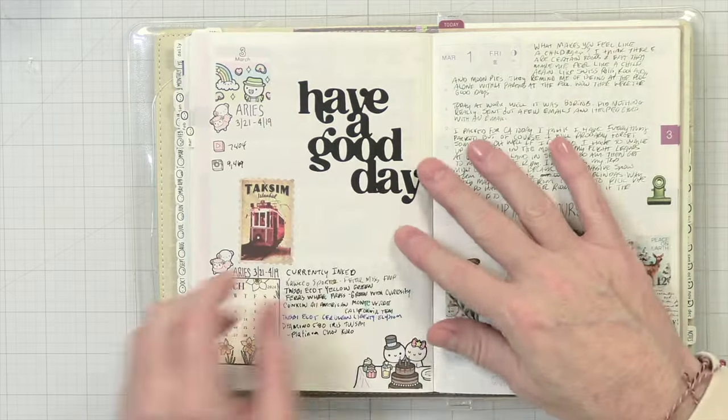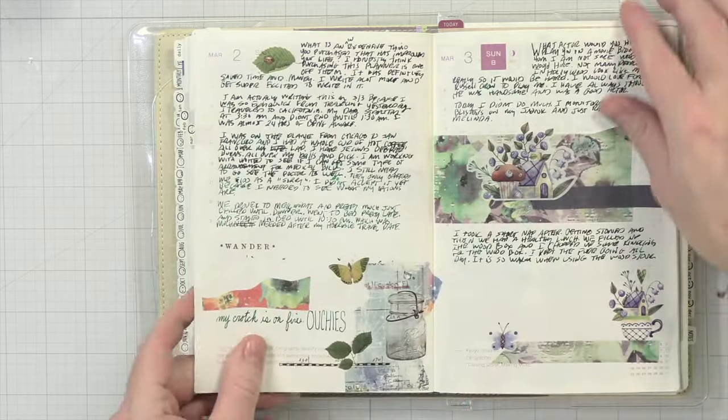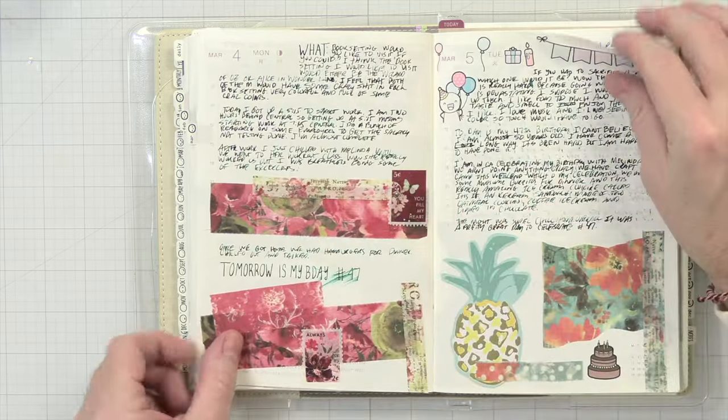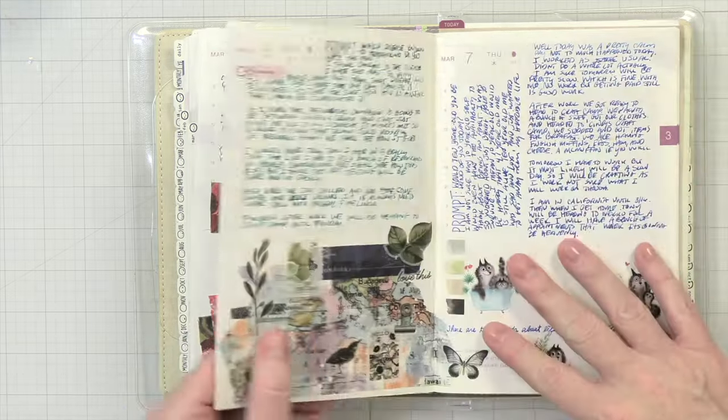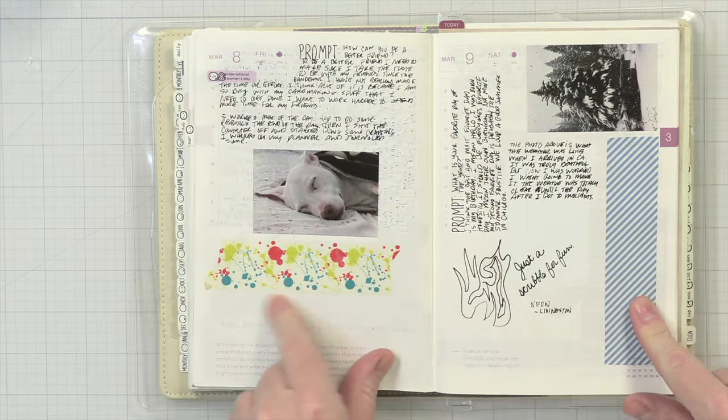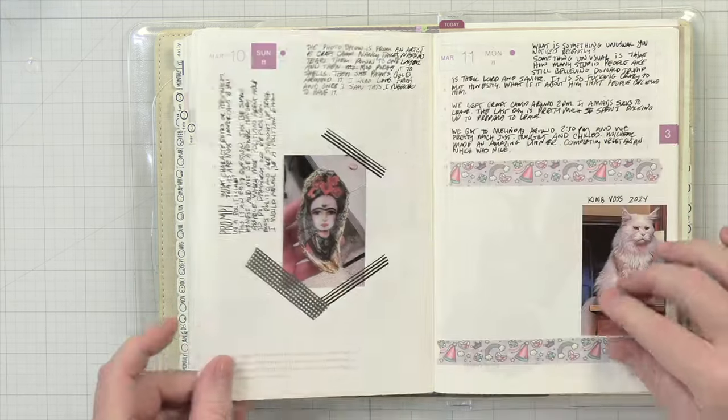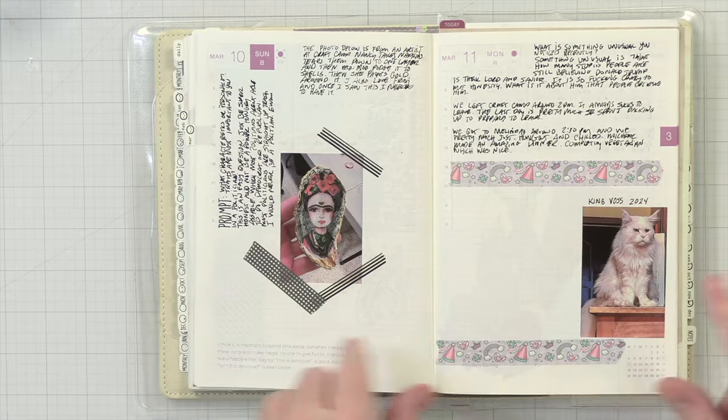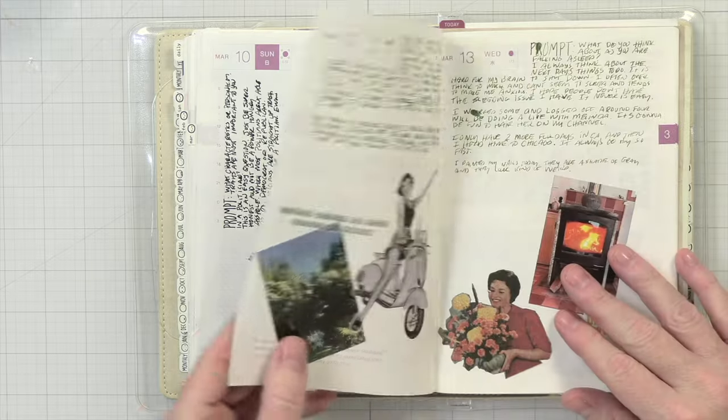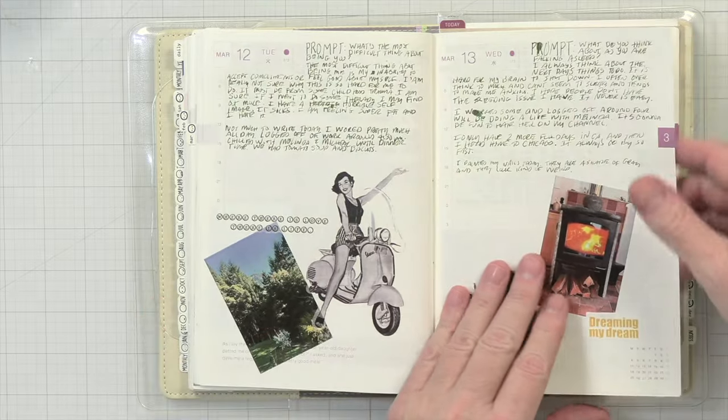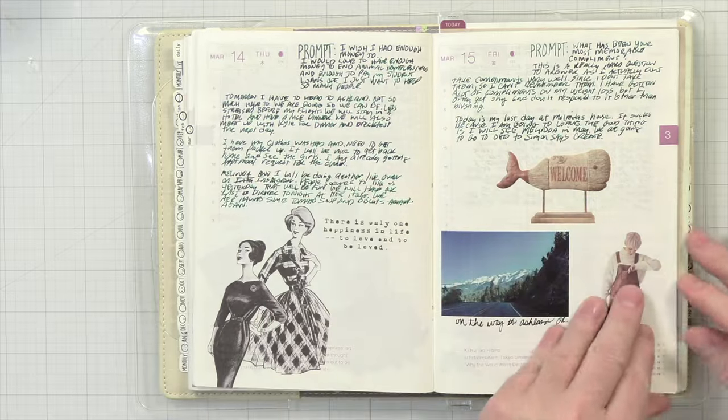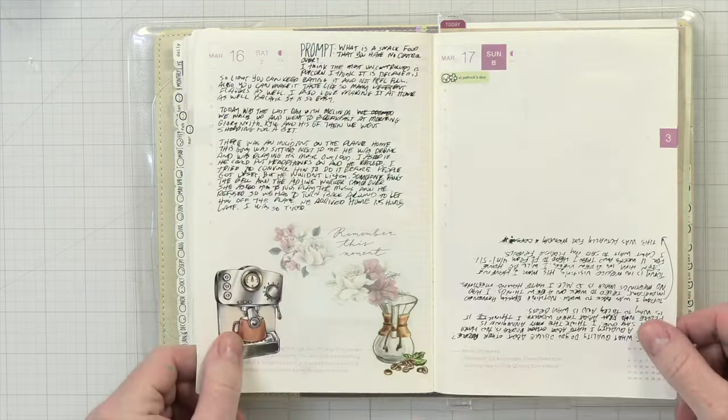And then we're into March. This is my birthday month. And then here you're going to see where I don't do a lot in some of the days here. Like I did some decorating, but you can kind of see I kind of fell off here with writing. I was on vacation, didn't have all my pens, King Voss. So I was just kind of chilling. I didn't really have a lot to write about other than the things that we kind of did that day.